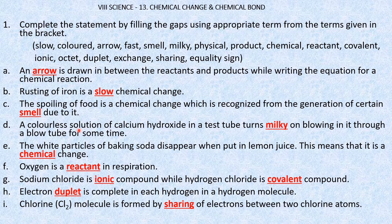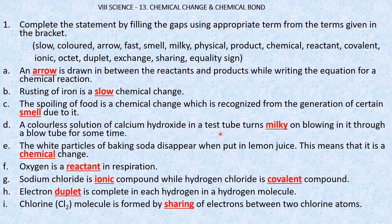A colorless solution of calcium hydroxide in a test tube turns milky on blowing into it through a blow tube for some time. When we blow, we give out carbon dioxide gas, and this carbon dioxide gas turns lime water — that is, calcium hydroxide — milky.